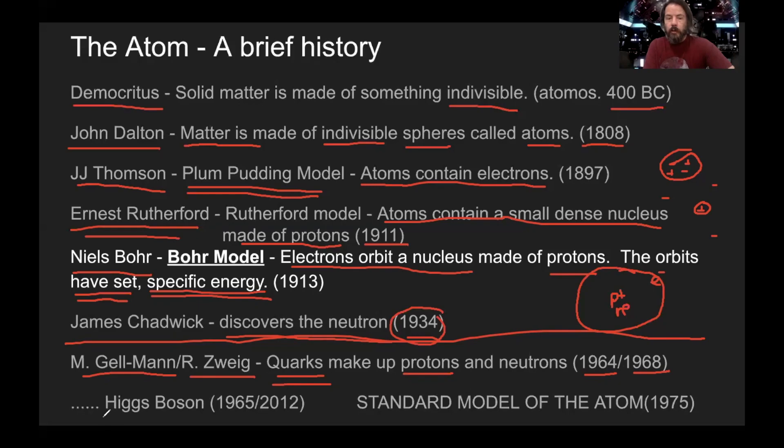When we talk about the Higgs boson, it was actually proposed in 1965. It wasn't officially discovered until 2012. So all of this to say that the modern theory of the atom is called the Standard Model of the Atom. It was developed in 1975. And if you'll notice, 2012, we are still putting the pieces together.